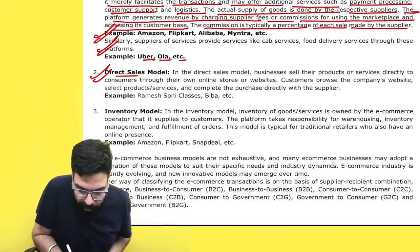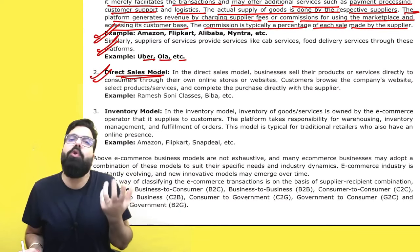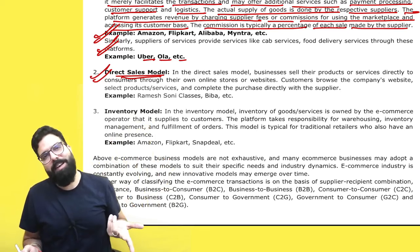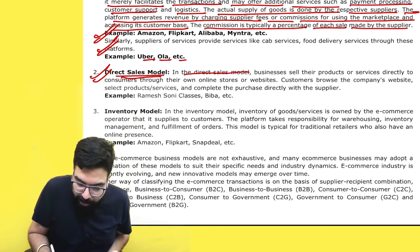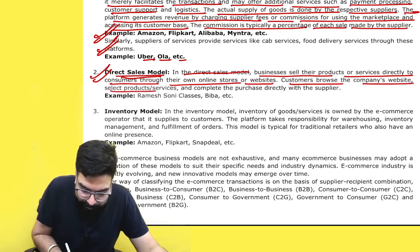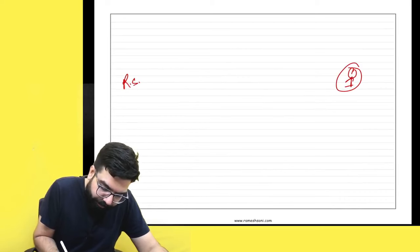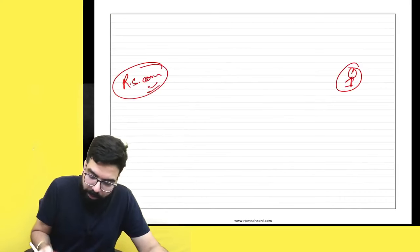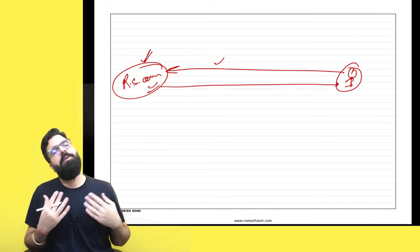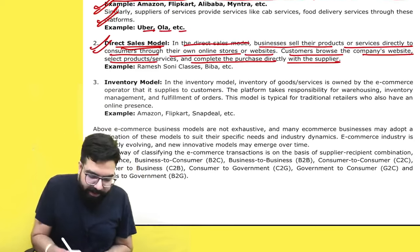Number two: the Direct Sales Model. For example, Ramasoni Classes — I have my own website. Through ramasoni.com, you come to my e-commerce platform, place the order, and I dispatch the goods to you directly. In the direct sale model, businesses sell their products directly to the consumer through their own store or website. The customer browses the website, selects the product, and completes the purchase directly with the supplier. There is no intermediary e-commerce operator in between.